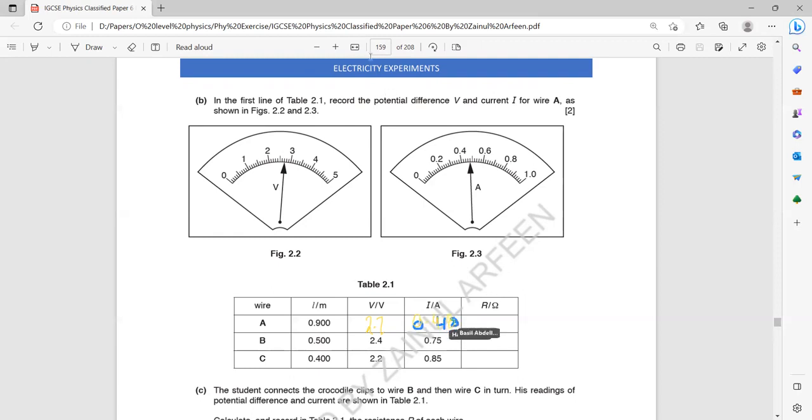0.48. Yeah, that's right, because each line is, look, 10 lines are there representing 0.2. So each line is representing 0.02. So this will be 0.42, 44, 46, and 48. So that's why 0.48. Then the student connects the crocodile clip B and C and he reads. Then calculate the resistance.